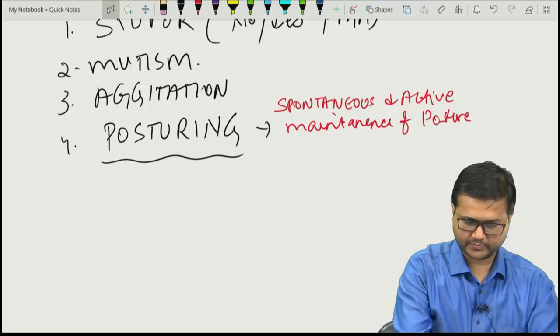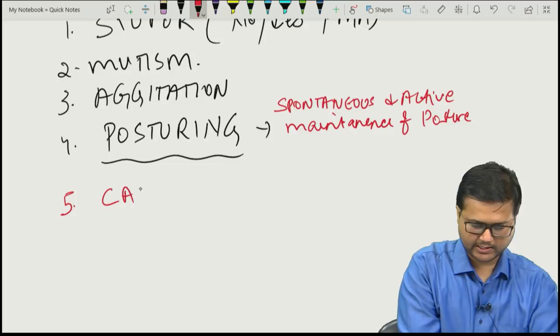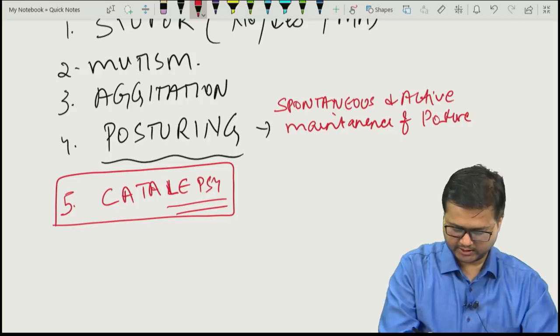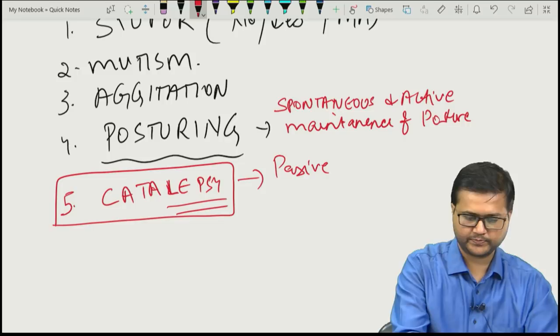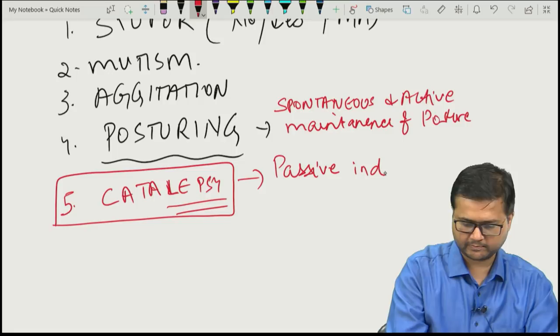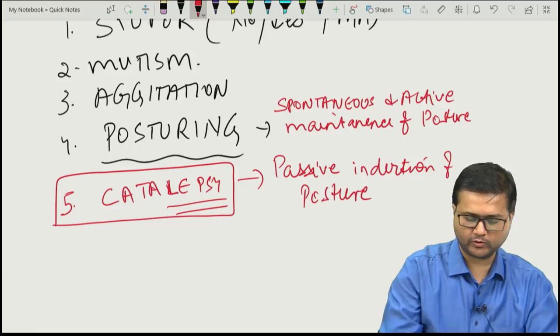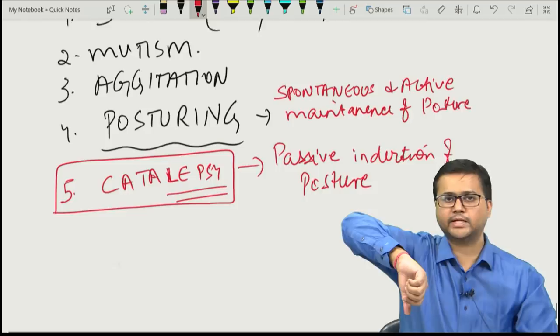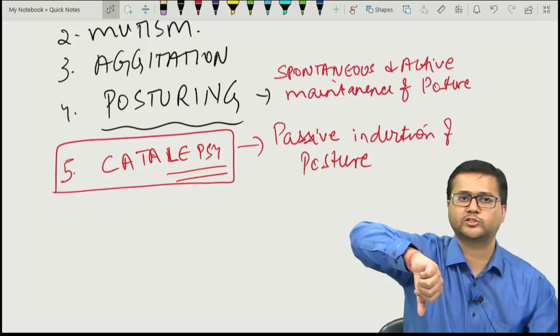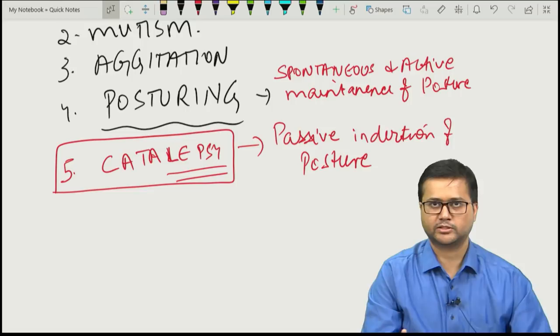Similarly, there may be catalepsy — passive induction of posture against gravity. The same posture is passively done by the examiner or someone else, and the person maintains it. The basic difference: posturing is spontaneous and active, while catalepsy is passively induced by someone else, with the patient then maintaining that posture.